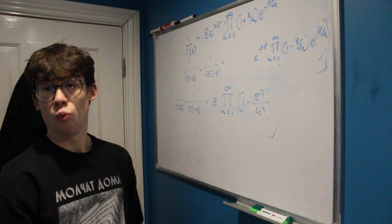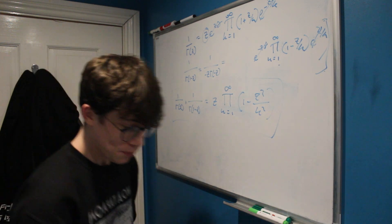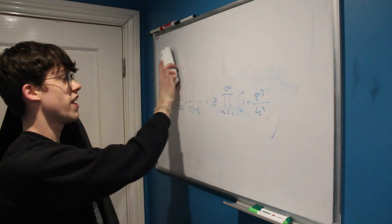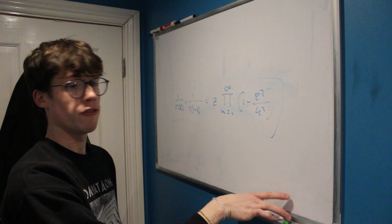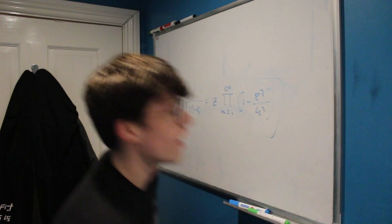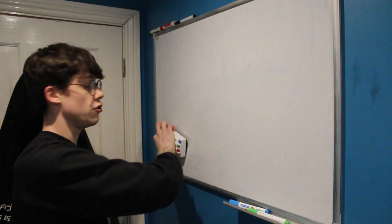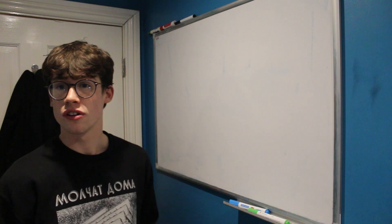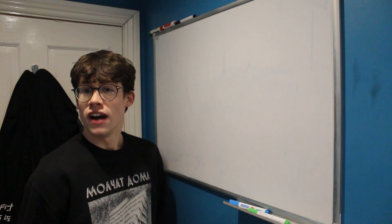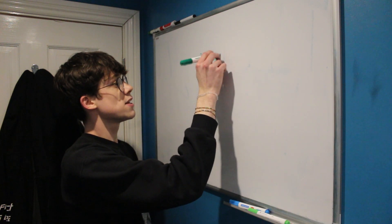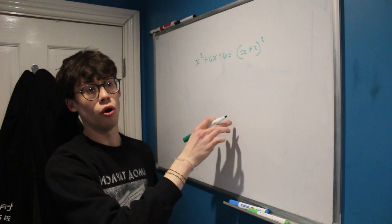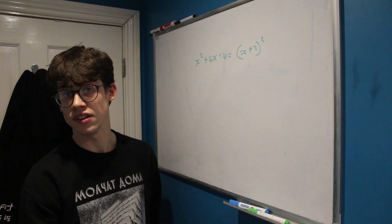So here is our expression for 1 over gamma of z times 1 over gamma of 1 minus z. To move on we need to derive an infinite product form of the function sine of x. This is significantly easier than for the gamma function because it has periodic zeros. We know that sine can be written as a Maclaurin series as a polynomial, and as a result it must be able to be factorized.